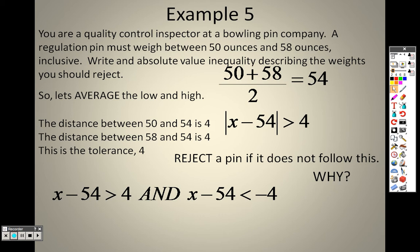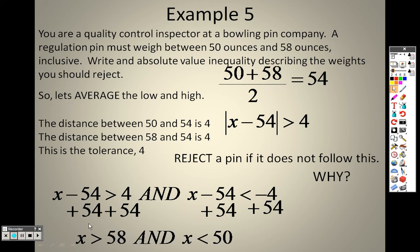So I separate these. Remember when it's greater than, you write down exactly what you have, which is right here. Then you write down exactly what you have, which is flip it. So I add 54 to both sides, both of those to solve for x. I end up with x is greater than 58 and x is less than 50.